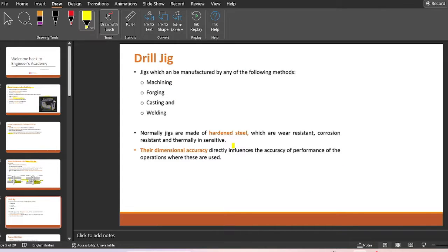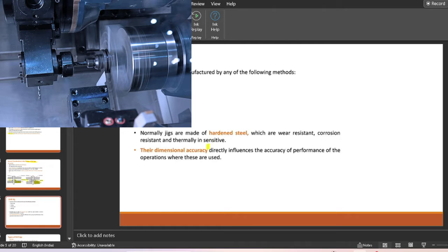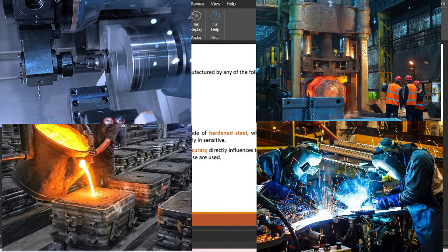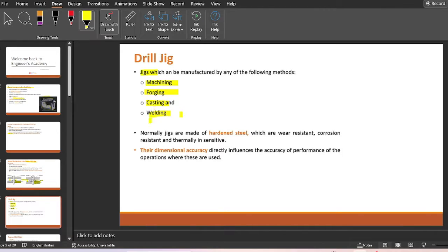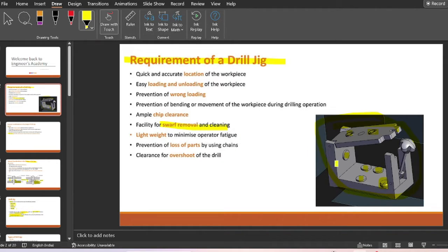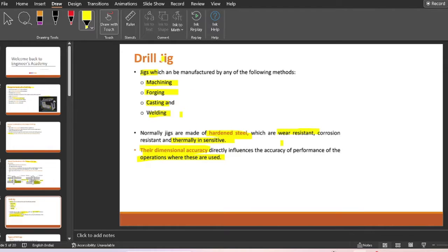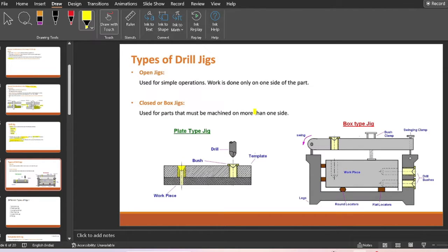A jig can be manufactured by any of the following methods: machining, forging, casting, or welding. Normally jigs are made of hardened steel or cast iron, which are wear resistant, corrosion resistant, and thermally stable. Their dimensional accuracy directly influences the accuracy and performance of the operation — specifically, the hole diameter in the jig affects the ultimate hole drilled in the workpiece.